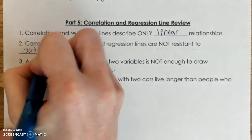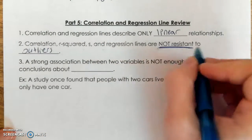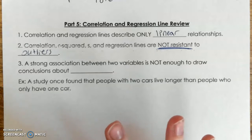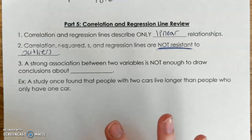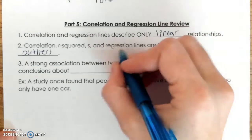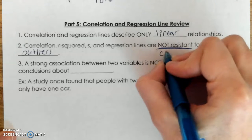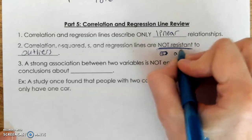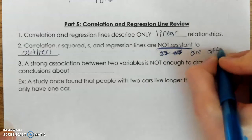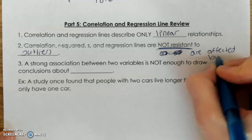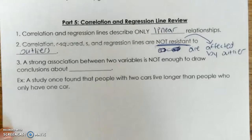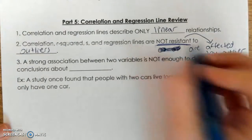Let's talk about what 'not resistant' means. If you are resistant to something — like if you're resistant to chickenpox — that means you won't get it. So if you're not resistant, chickenpox could affect you; you could get it. When we say that regression lines are not resistant, we mean they are affected by outliers. That's what 'not resistant' means: they are affected by outliers, and outliers can change them.